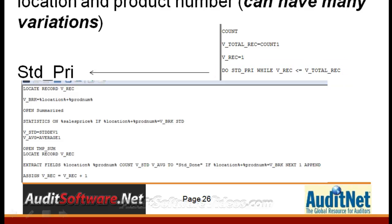That counter, VREC, is going to be assigned an additional record or count number each time it goes through this test. It's going to be a little bit easier to see this in ACL, but I wanted to give you the overview of how this test is going to create a standard deviation and align it back to the detailed transactions.